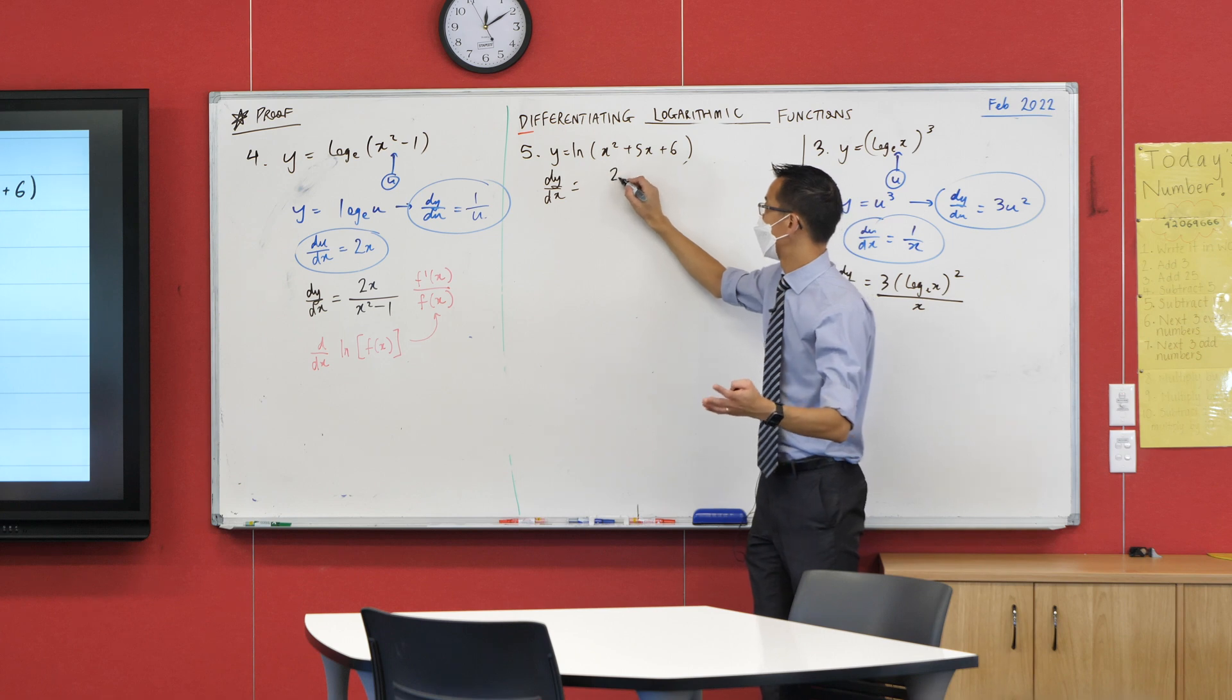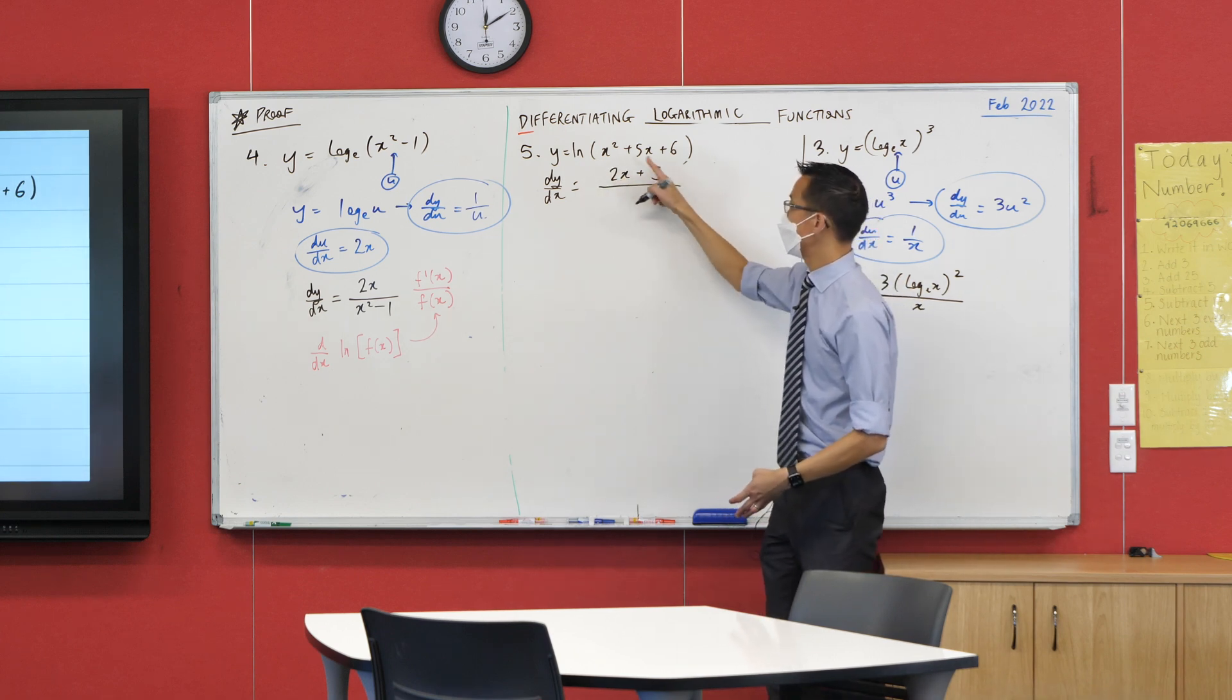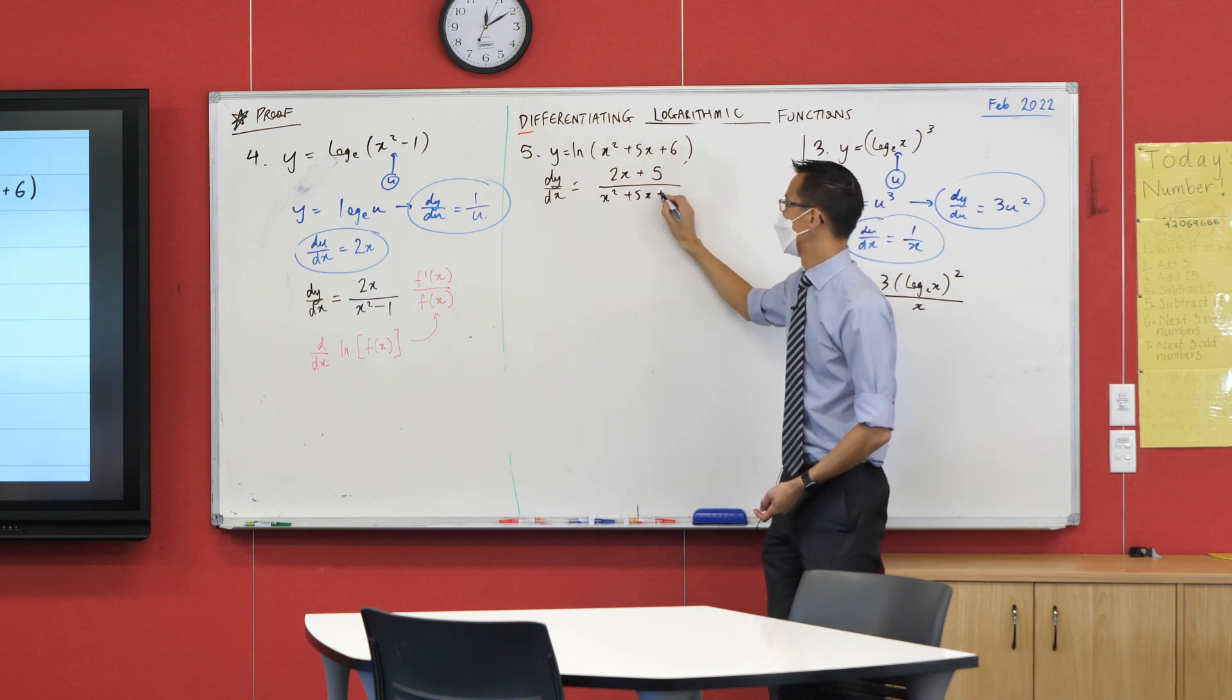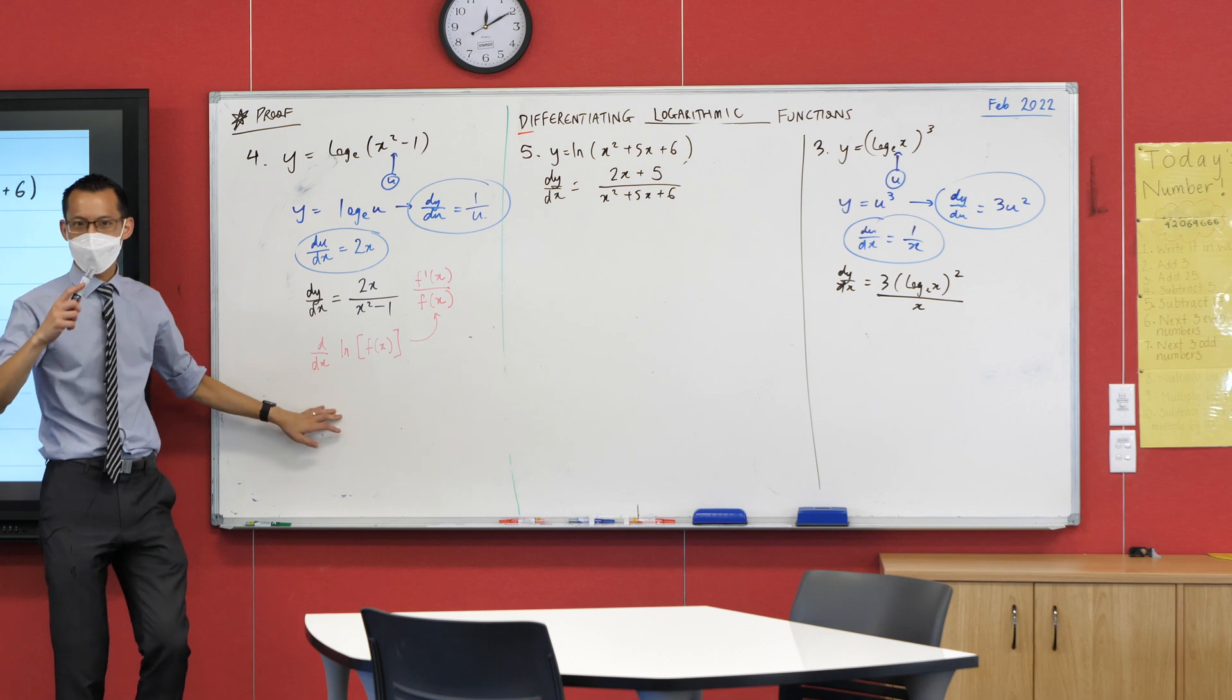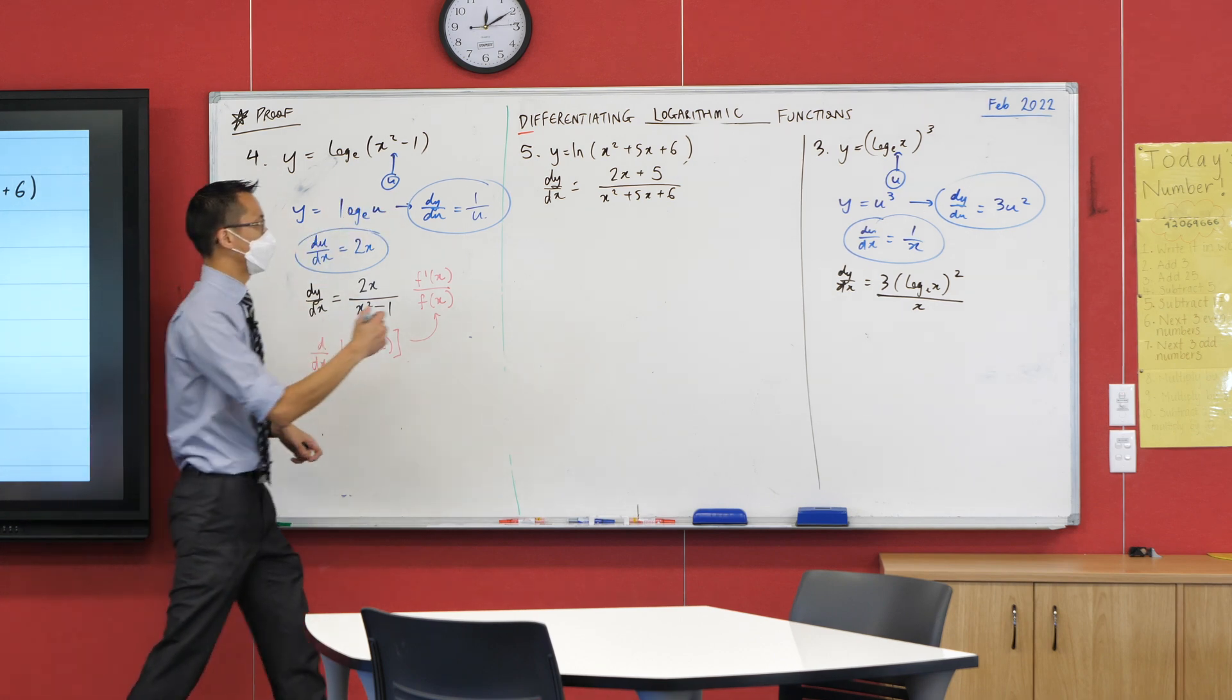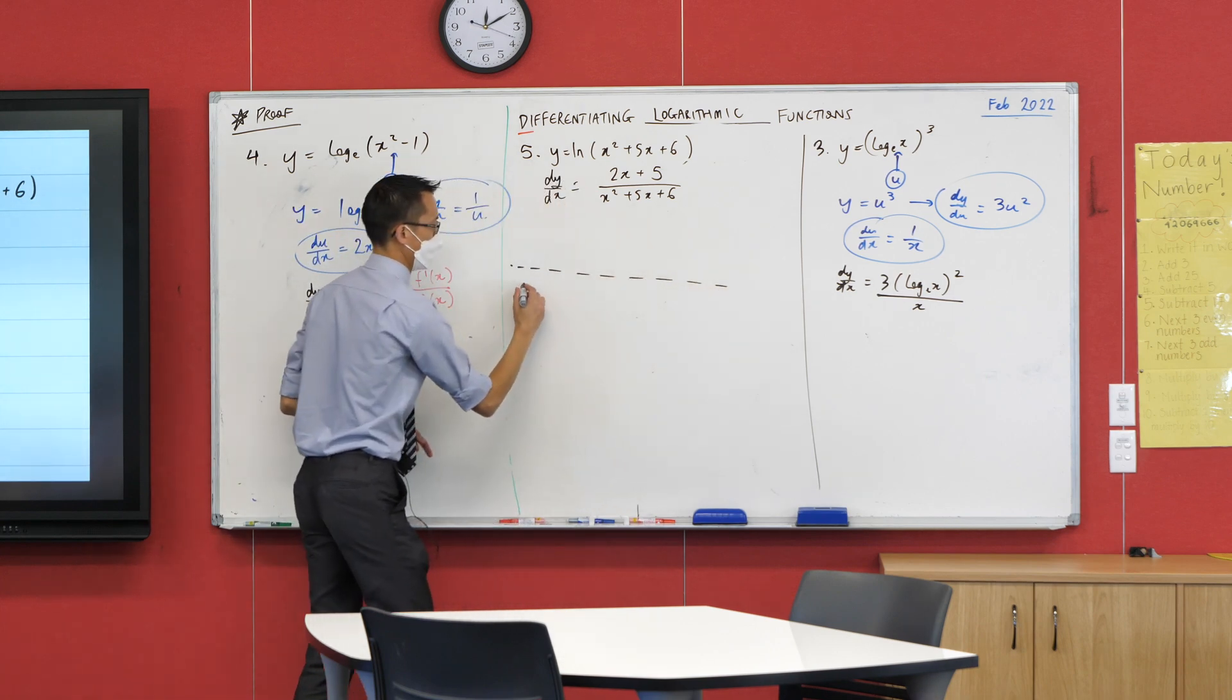2x plus 5—nailed it. There's the numerator, and the denominator is going to be whatever was there to begin with. So in this case it's x² + 5x + 6. So it's really nice—you're finished, you don't have to do any more. Just like differentiating exponentials is quite easy, logs same deal.